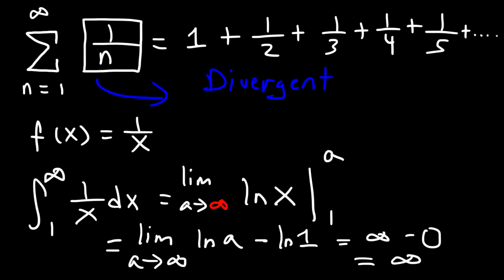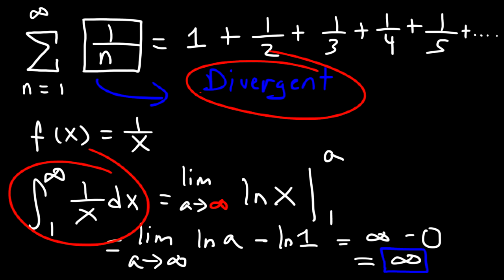So the integral of 1 over x from 1 to infinity is divergent, because we didn't get a finite answer. Our answer is infinity. So because, according to the integral test, the integral from 1 to infinity is divergent, then the series must also be divergent. So that's another way in which you could show that the harmonic series is divergent.